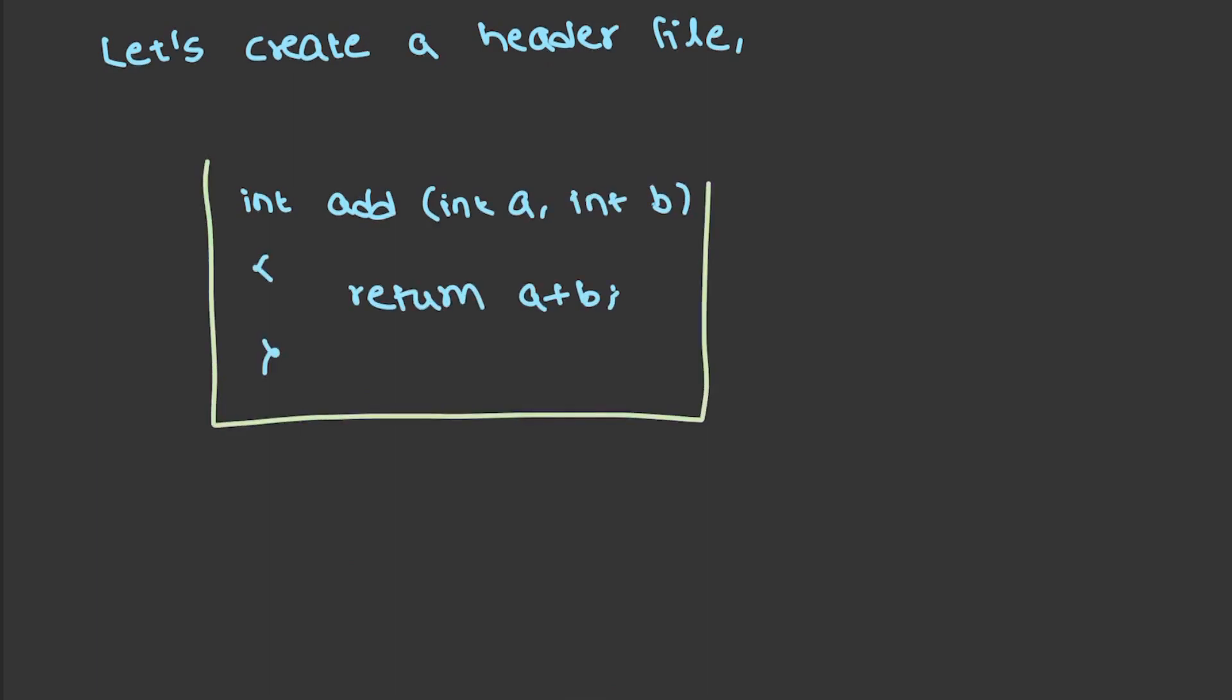Consider you have written a function for addition. Just imagine this is a very complex program and you want to reuse this code. That means whenever I write add of 5, 3, it has to be 8. It has to give me the result.